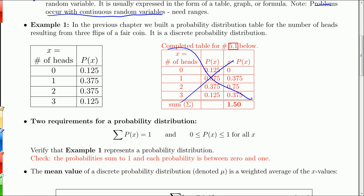There's only two requirements for a probability distribution. First, the sum of all the P(x)'s has to equal one. You have to add up all the probabilities to get exactly one. And all of the individual probabilities have to be between zero and one. If you get a negative probability or a probability greater than one, it's not a probability distribution.